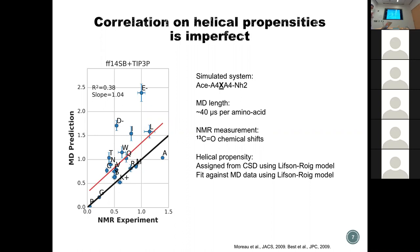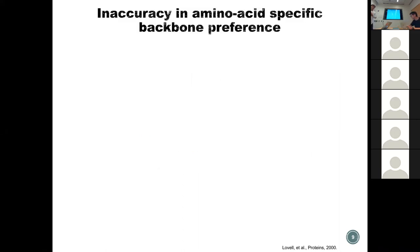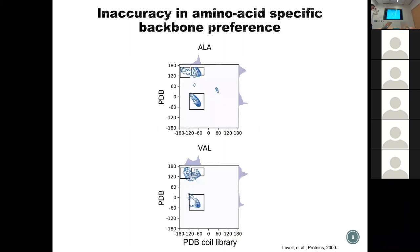We see this problem and we're trying to fix it, but instead of empirically fixing the symptoms like helical propensity correlation, we ask a more general question: what is fundamentally limiting the sequence dependency? The error or inaccuracy is in the amino acid-specific backbone preference. Here I'm showing phi and psi distributions for alanine and valine from the PDB coil library. They are clearly different: alanine prefers PP2 much more than extended/beta, and valine prefers a more flat distribution with even peaks at beta and PP2.